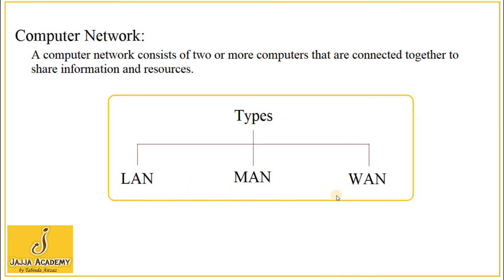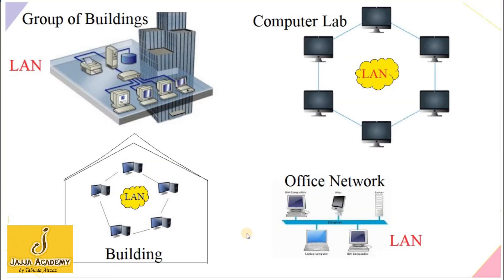Let's discuss these types in detail. Local Area Network — LAN — is the most common type of computer network and it covers a small area. Small area means a building: a network made in a building or a network made inside an office.